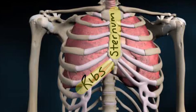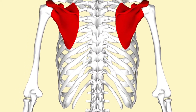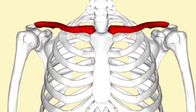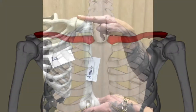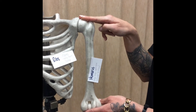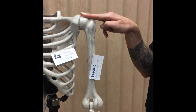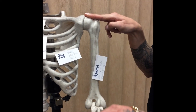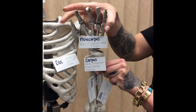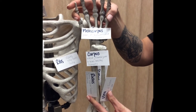Continuing down the arm, we have our humerus — the largest bone in the arm, from our shoulder to our elbow. Past our elbow we have our forearm, which consists of our ulna and our radius. The ulna is the larger bone on the pinky side, and the radius is the smaller bone on the thumb side. Below that we have our carpus, which is our wrist, made up of eight small irregular bones. Then our metacarpus, which is our palm — we have five. And then our digits, or phalanges, which are our fingers.